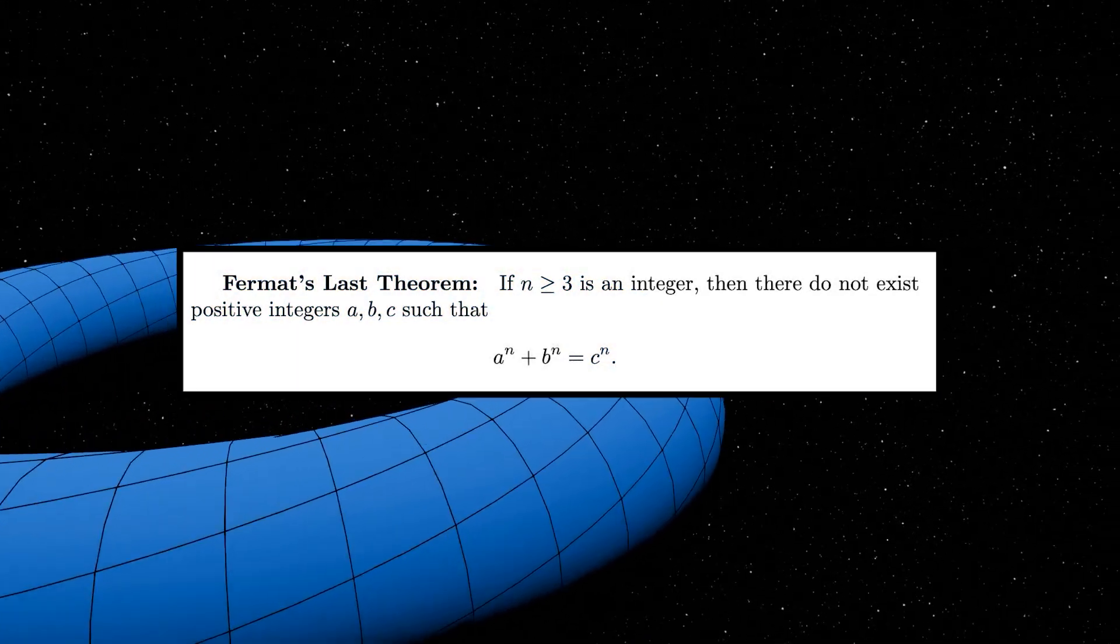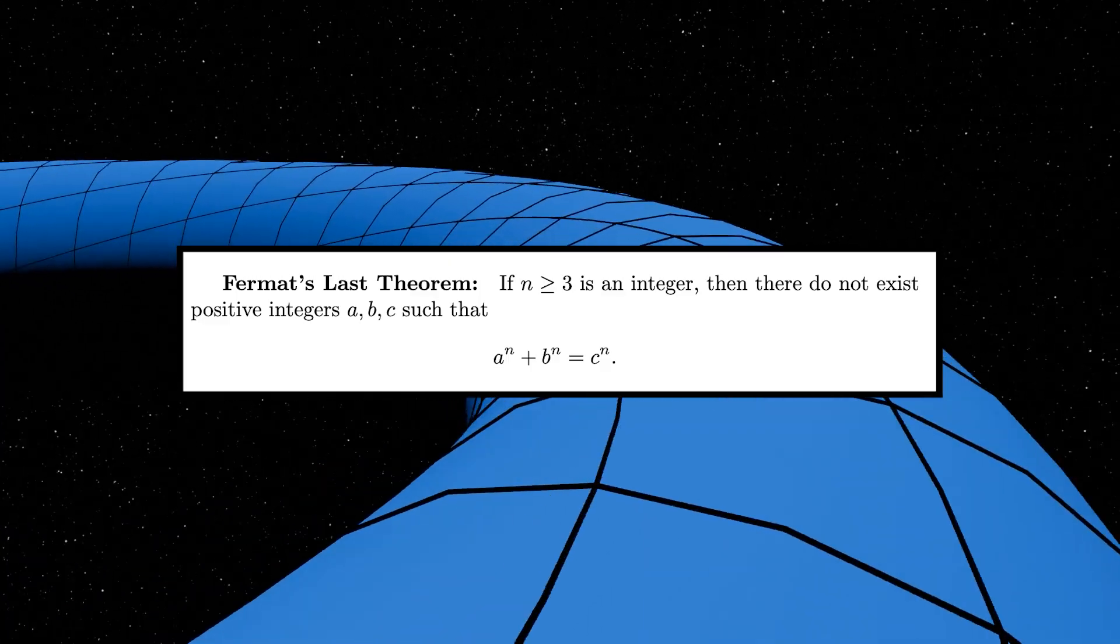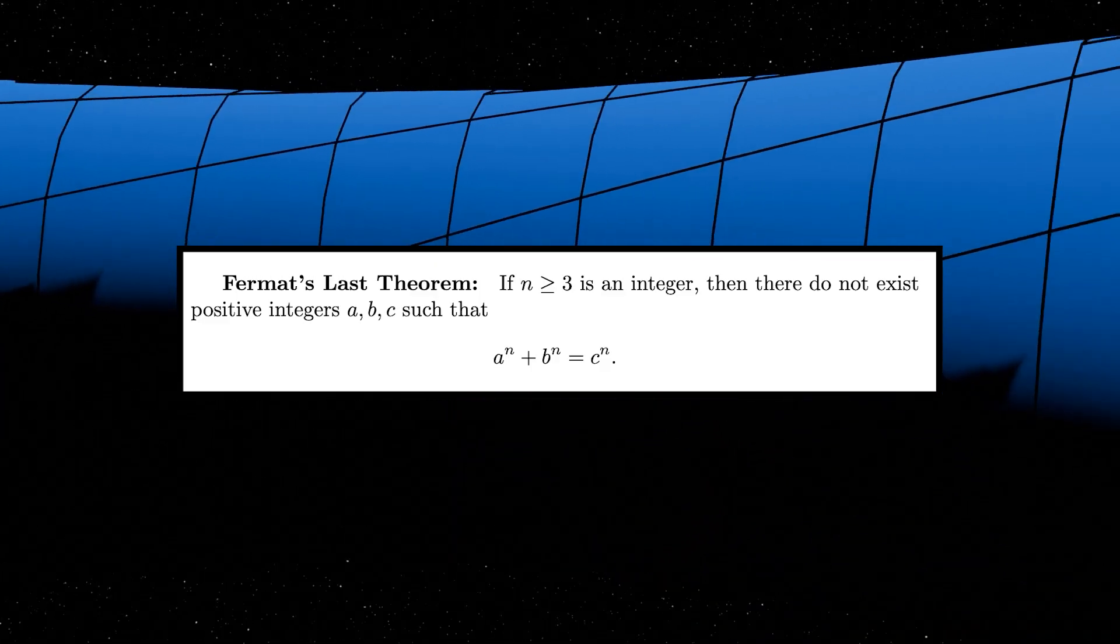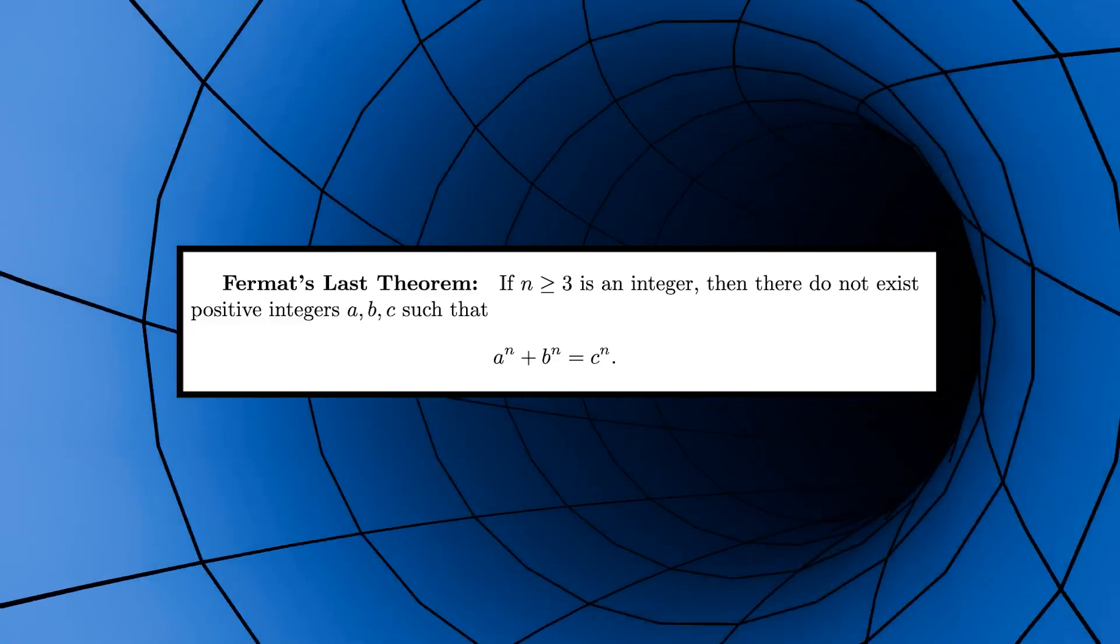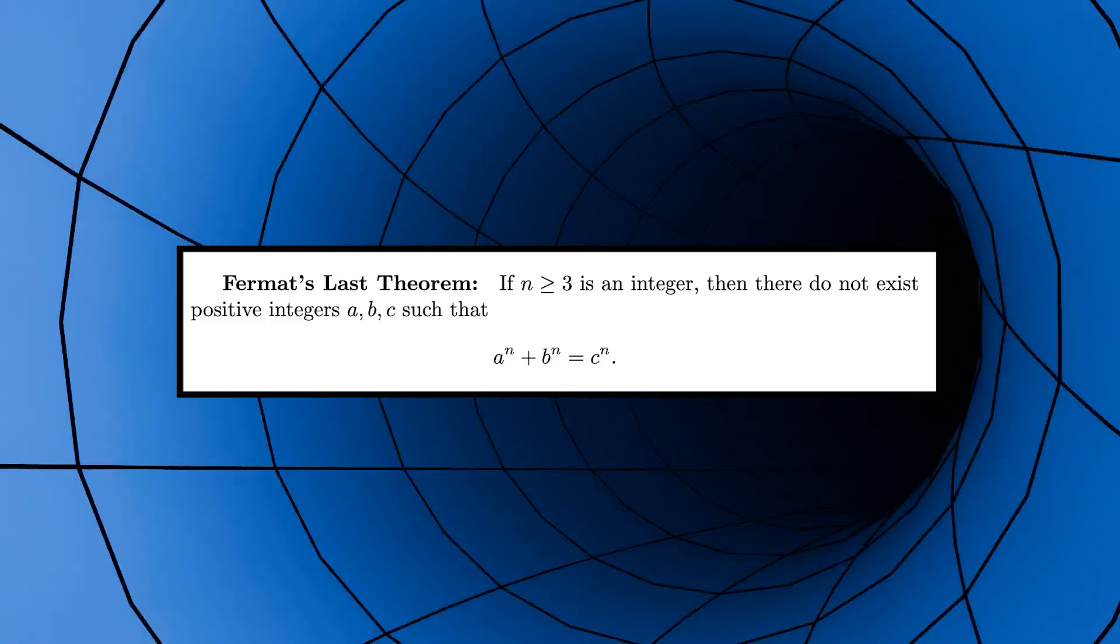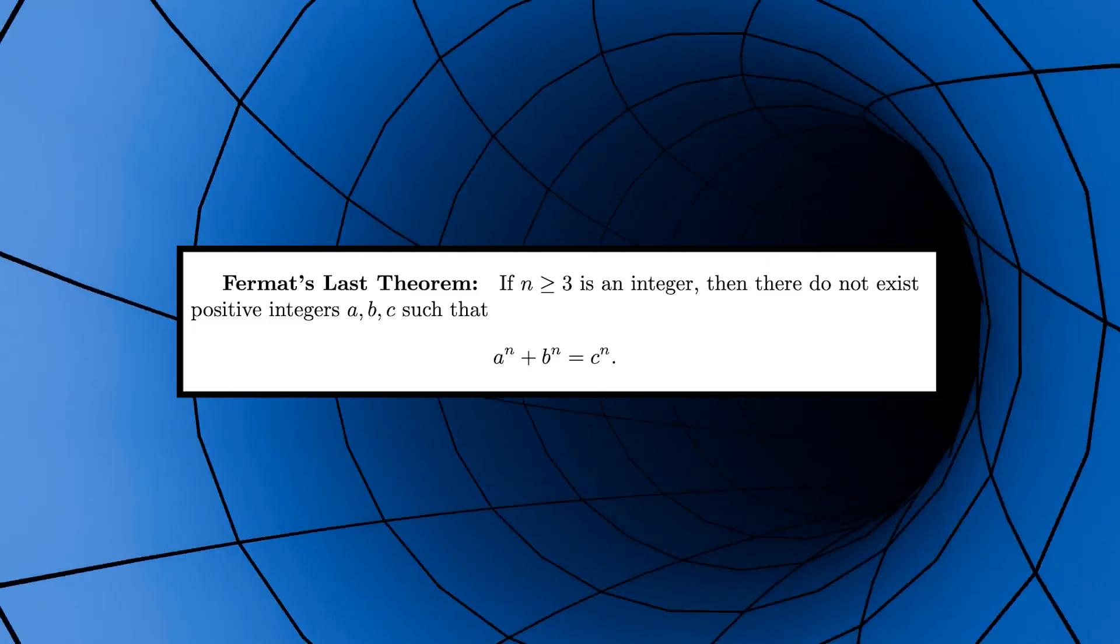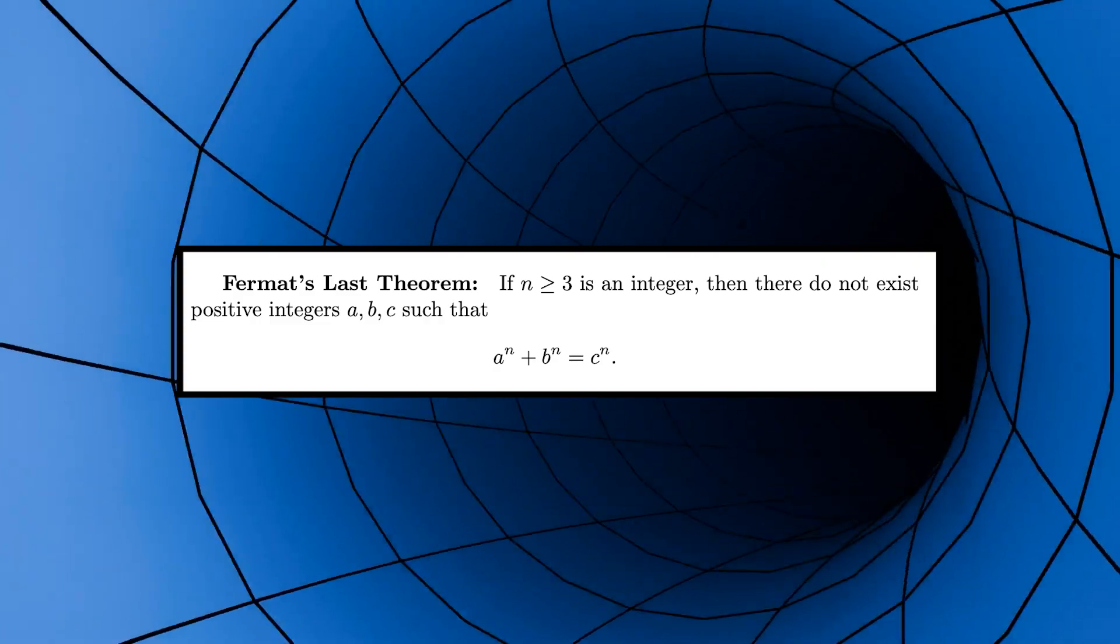A problem like Fermat's Last Theorem is incredibly simple to state, but its proof requires so many abstract tools that almost no one except the experts can understand it. But why is it so? Wasn't there a way to prove such an easy-to-state problem without going into incredibly abstract and strange places?